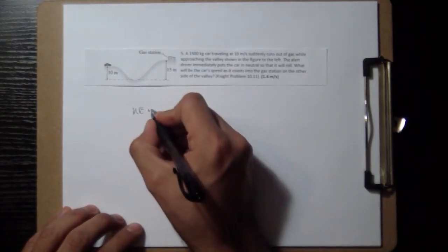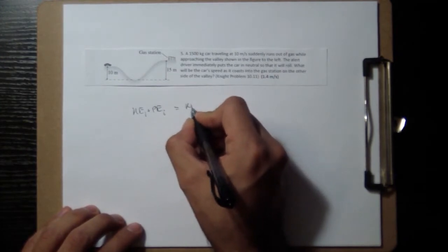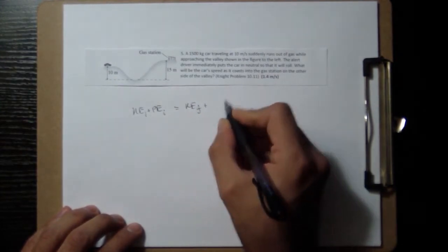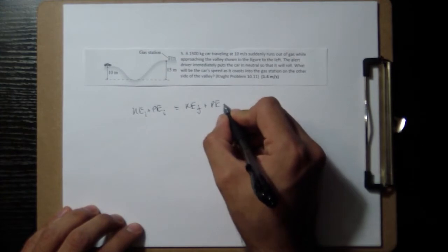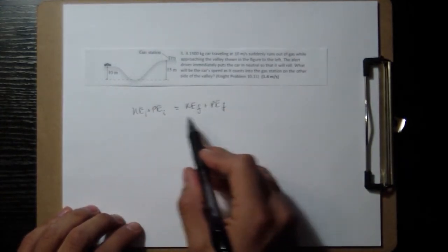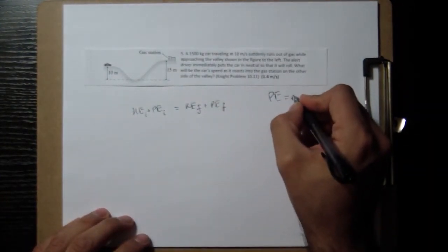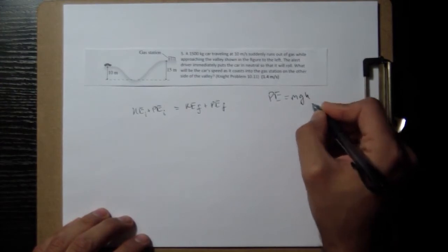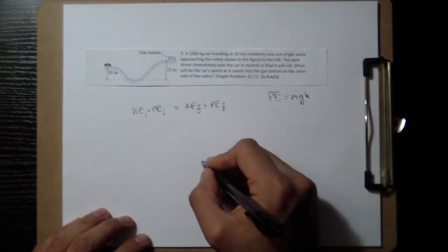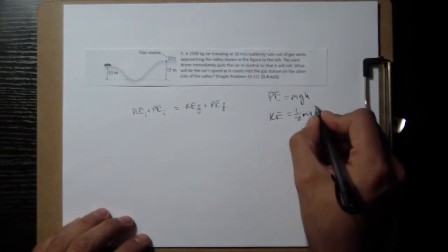The kinetic energy plus the potential energy at the beginning is going to have to be the kinetic energy and the potential energy at the end. The only potential energy that we have involved here is going to be the gravitational potential energy, which is mass times gravity times the height, and the kinetic energy of course is one half mv squared.